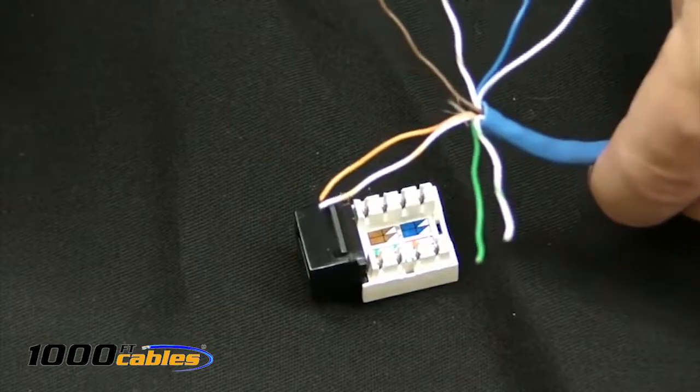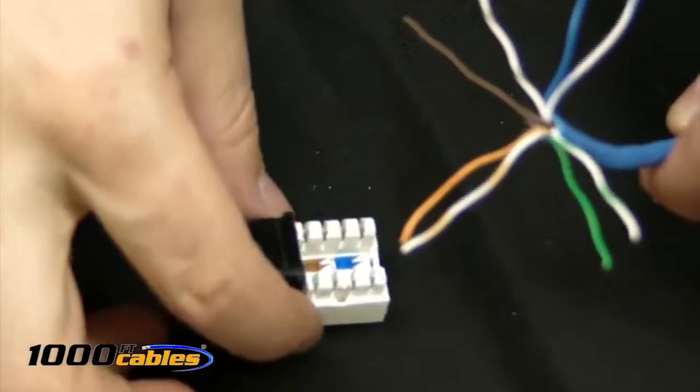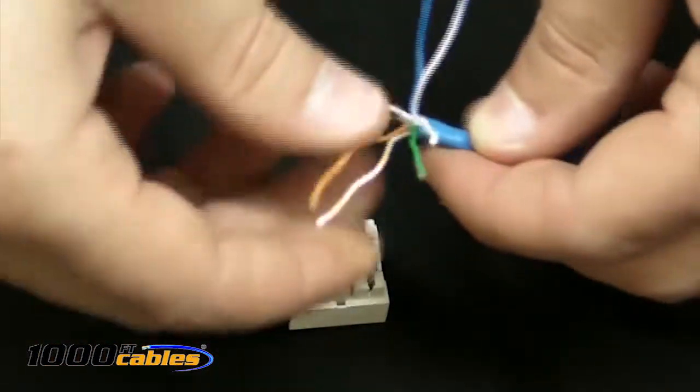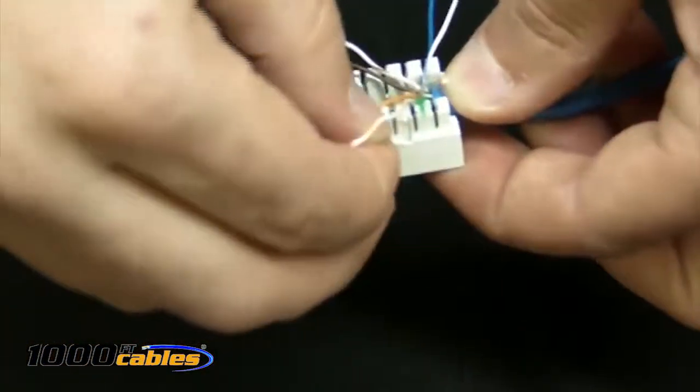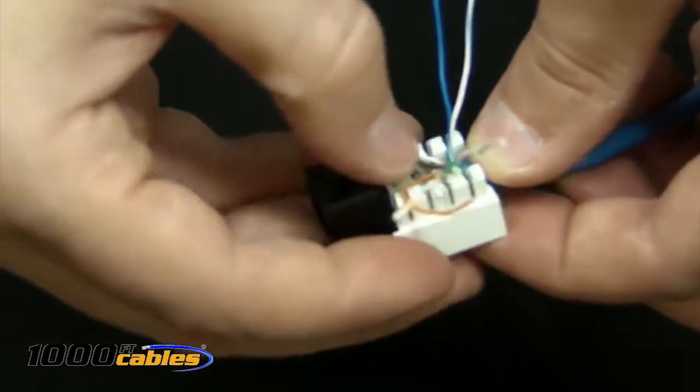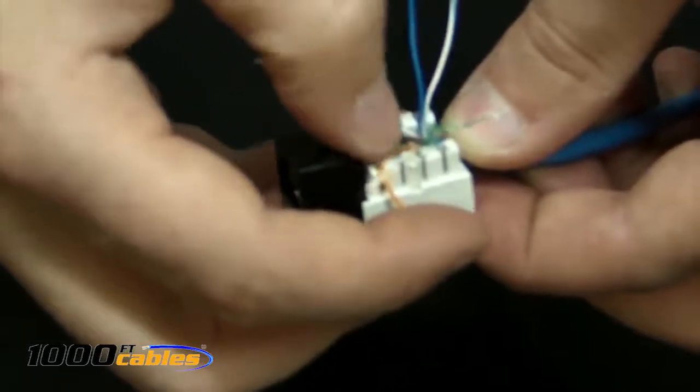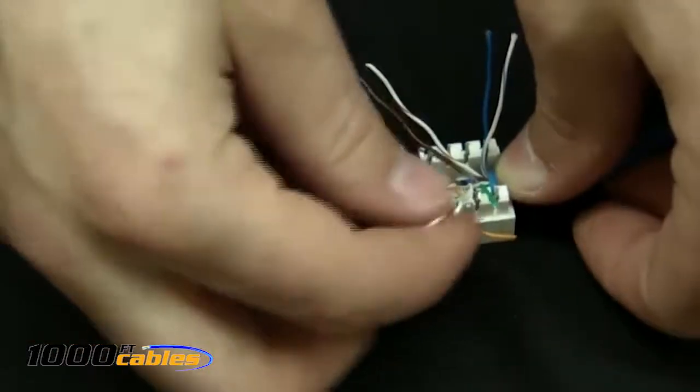Next, you want to take your Cat5 wire. We separated the four pairs of wires. Take your keystone jack. You want to go ahead and lay this about a quarter of an inch in. You want to go ahead and put the corresponding wires, which would be the B chart, in their slots.